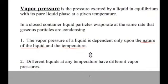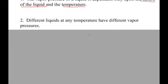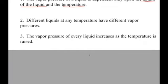Different liquids at any temperature have different vapor pressures because of their polarities. The vapor pressure of every liquid increases as the temperature is raised. As we increase the temperature, we're putting more energy into those liquid particles, and they are able to overcome the attractive forces holding them in the liquid state. When a particle can overcome those forces, it is more likely to leave the liquid state and become a gas.